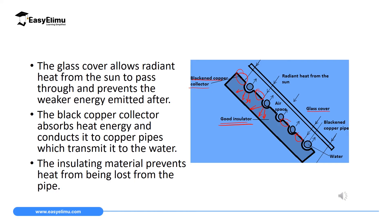The glass window is transparent, allowing radiant heat from the sun to pass through into the copper pipes and the blackened copper collector. However, the glass is also designed so that only high-energy heat from the sun can enter. When the blackened copper pipes emit heat — since they are also good emitters — that emitted heat is of low energy, and the glass ensures this low-energy heat is not transmitted out, maintaining heat within the system.